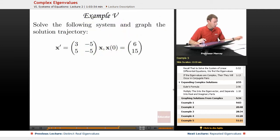In our next example here, we're going to solve the following system and graph the solution trajectory. This is x prime equals the matrix (3, -5; 5, -5) times x, with initial condition x(0) equals (6, 15). So we're going to use that initial condition to find the values of the constants in the general solution from before.